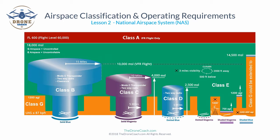Non-regulatory airspace includes prohibited, restricted, warning, military operation, and alert areas, as well as controlled firing areas — in all of those areas the FAA does not enforce. Controlled airspace is a generic term covering different classifications of airspace and defined dimensions within which air traffic control (ATC) service is provided in accordance with that particular airspace classification.